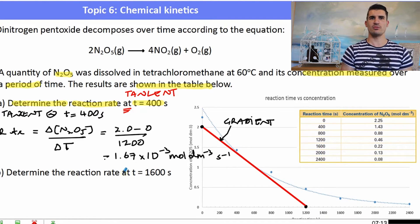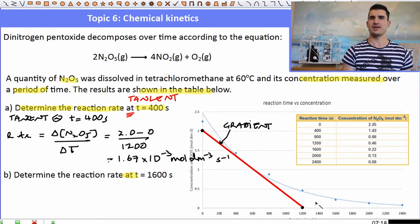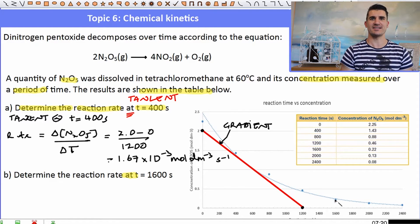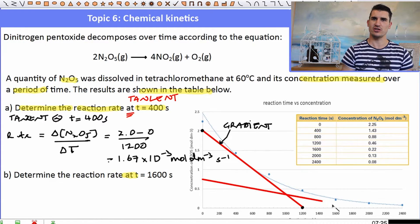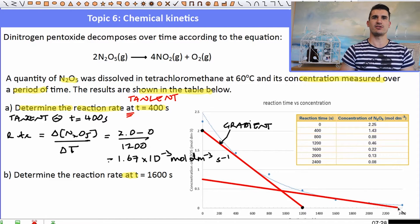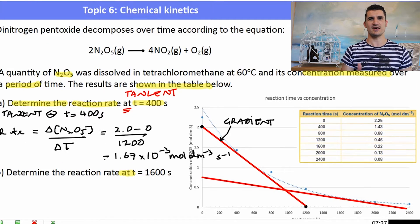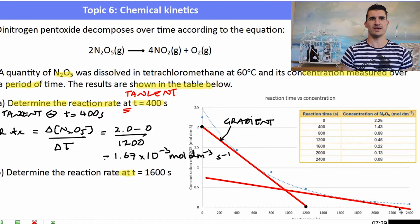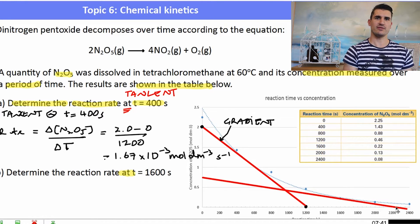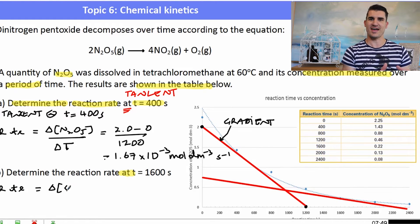So plugging that into the calculator I get the value of 1.67 times 10 to the minus three and my units will be mole per decimetre cubed per second. The second part says to determine the rate of reaction at 1600 seconds. So again, this is the same process. The word at means we need to draw a tangent at 1600. So we go and find the point at 1600 and we draw a tangent on that curve. Again, I don't think I did a great job on the computer. It was a little bit hard, but do it on your paper and you should be able to see where they connect to both the x and the y-axis and that will make your life a lot easier.